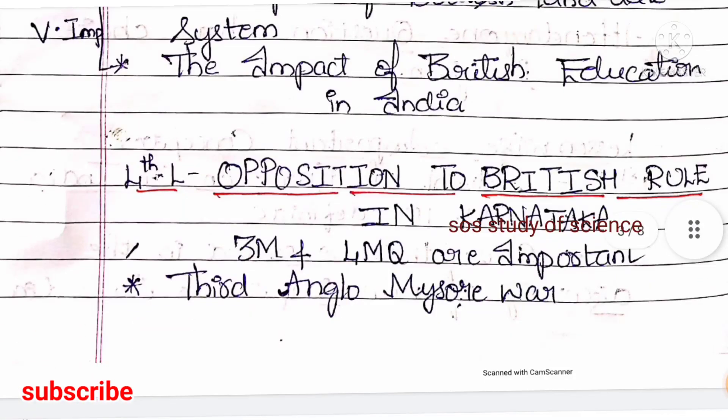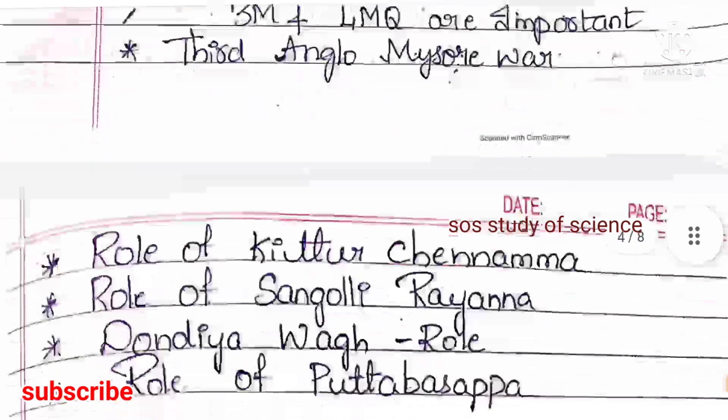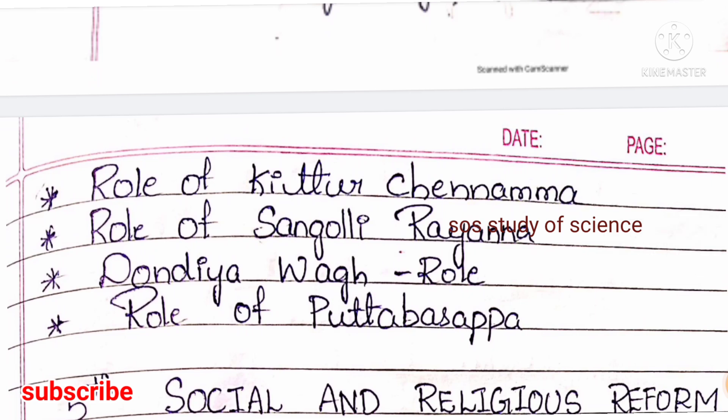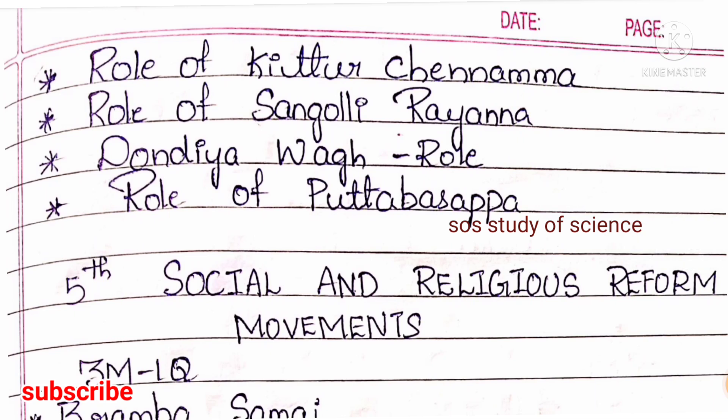Lesson 4 is Opposition to British Rule in Karnataka. Here you can expect both 3-mark and 4-mark questions. These are frequently asked questions in the examination, so give more importance to the important concepts from this lesson.